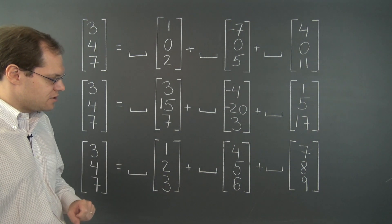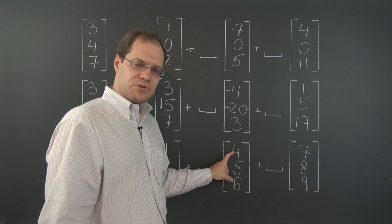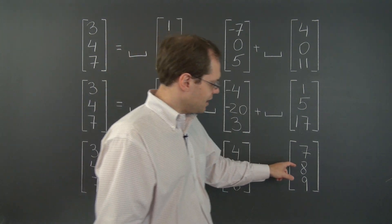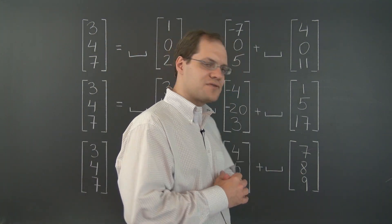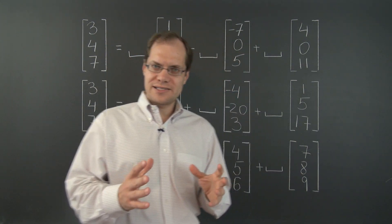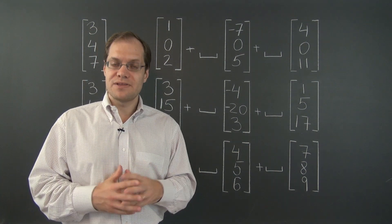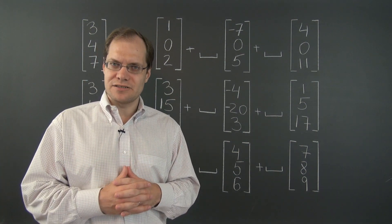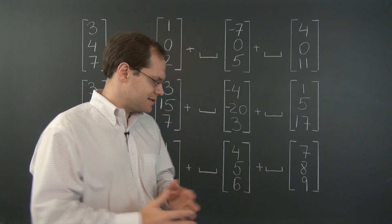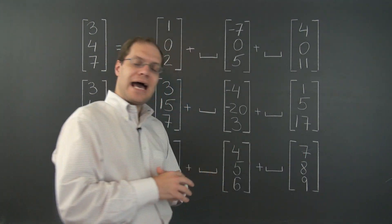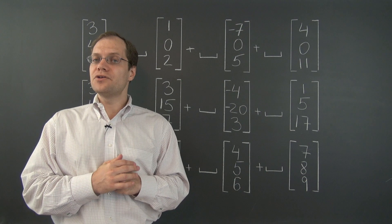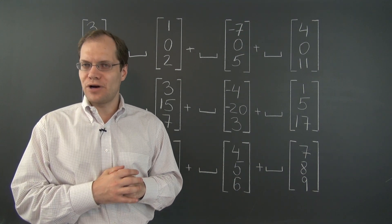So the relationship that's relevant here is that the middle entry is the average of the other two. Two is the average of one and three. Five is right between four and six. And eight is, once again, the average of seven and nine. And once again, it's the kind of property that survives linear combinations. Take any two vectors that have that property. Let's do these two. Add them together.